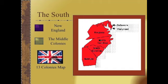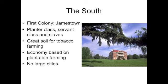The last formal colonial region is the South, consisting of Delaware, Maryland, Virginia, North Carolina, South Carolina, and Georgia. The South was distinctly different from the other colonies because of its economy and the makeup of the people who ran it. The first American colony was in Jamestown, Virginia. After a brief period of suffering and starvation, the colony began to thrive. The economy and social class were based on a class system of planters, servants, and slaves.